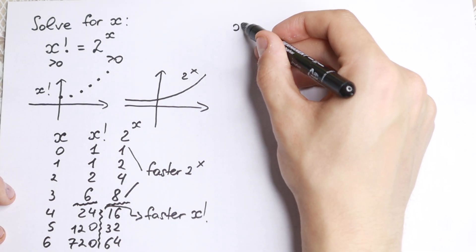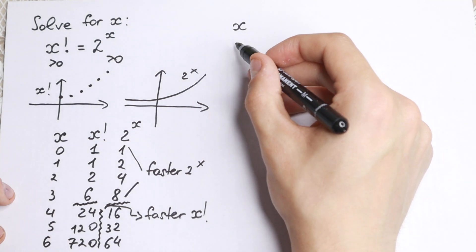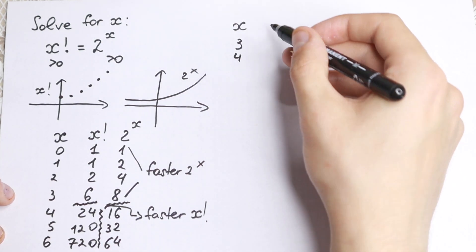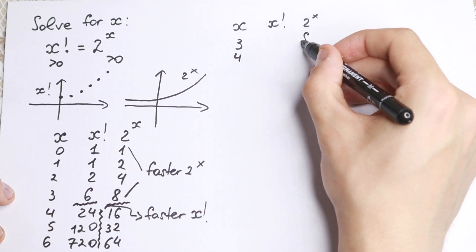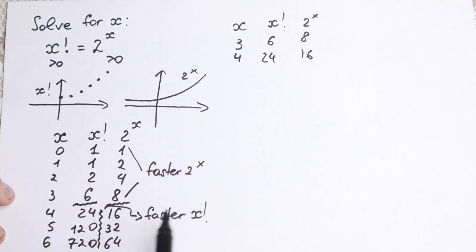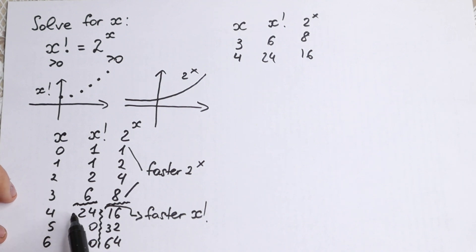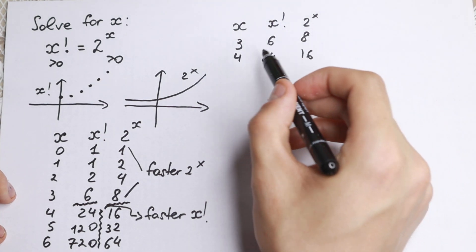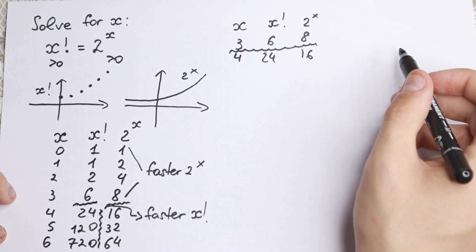Let me write this out. At x equals 3: x factorial gives 6 and 2 to the x gives 8. At x equals 4: x factorial gives 24 and 2 to the x gives 16. So this is the moment of intersection — 2 to the x goes faster, then x factorial goes faster. The root will be between 3 and 4. They intersect between 3 and 4.